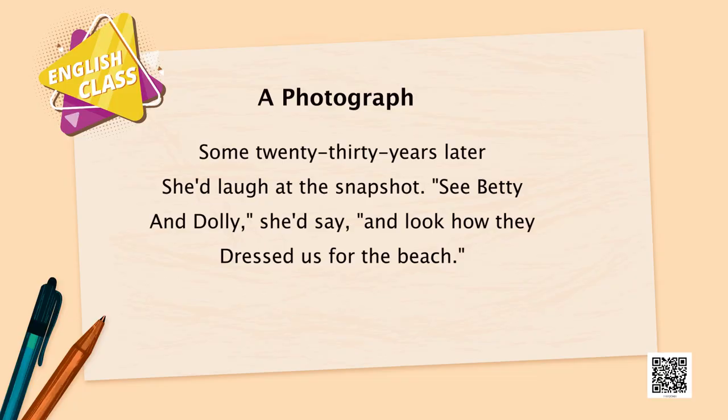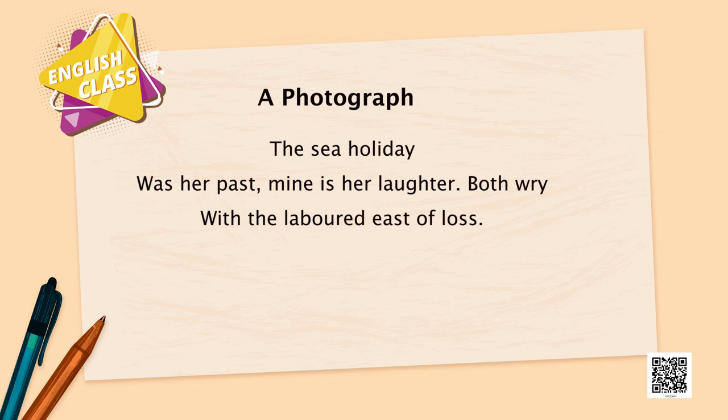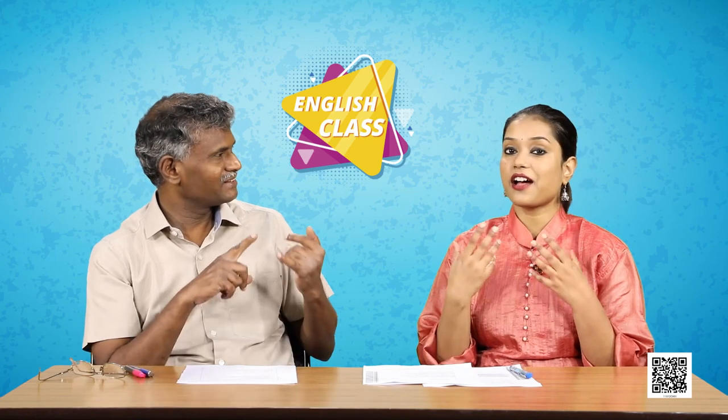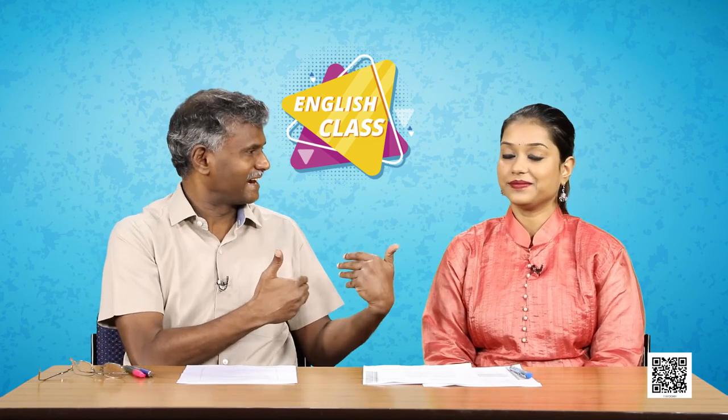Some twenty, thirty years later she would laugh at the snapshot. See Betty and Dolly, she would say, and look how they dressed us for the beach. She is almost describing the photograph and laughing — mocking at it, as if saying 'How did I do that? Could I do that?' The same thing Kushwant Singh was describing: 'I would never believe that this old lady was once young and pretty.' Sometimes we would refuse to believe our grandparents were young — they were like boys and girls, playing and doing mischief; but now they are altogether a different personality.